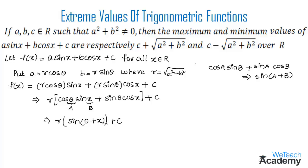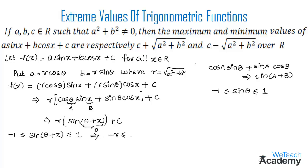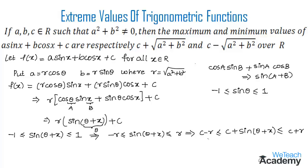We already know that sine theta lies between minus 1 and 1, that is minus 1 less than or equal to sine(theta plus x) less than or equal to 1. Multiplying through by r gives minus r less than or equal to r·sine(theta plus x) less than or equal to r. Then adding c to all terms, we get c minus r less than or equal to c plus r·sine(theta plus x) less than or equal to c plus r.